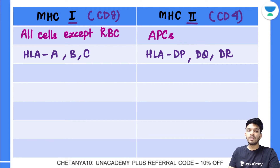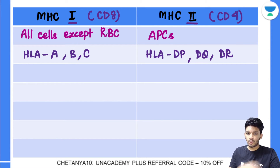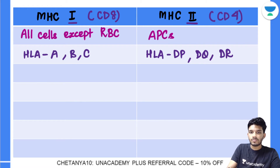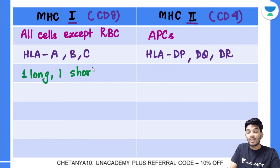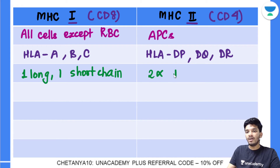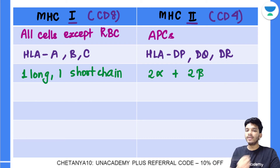Regarding structure: MHC1 has one in its name, so it has one long chain and one short chain. MHC2 makes life easy too — it has two alpha and two beta chains. So MHC1: one long + one short chain; MHC2: two alpha + two beta chains.